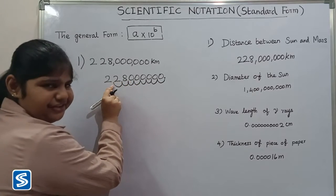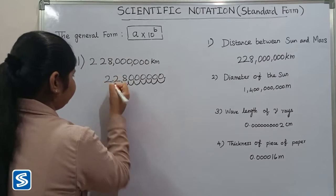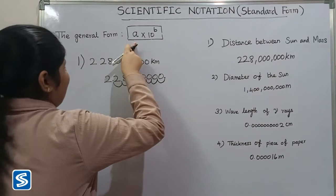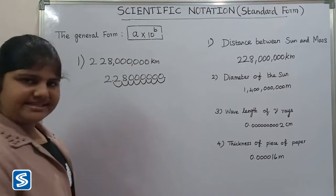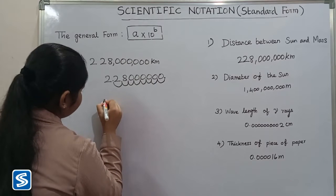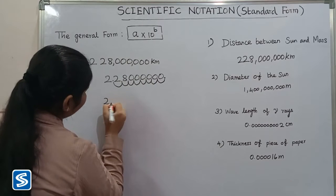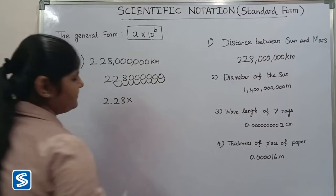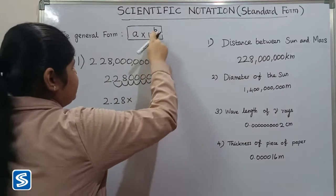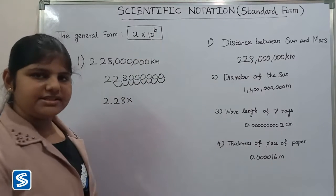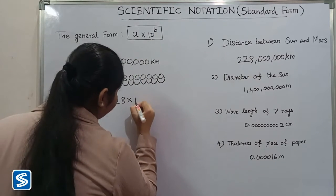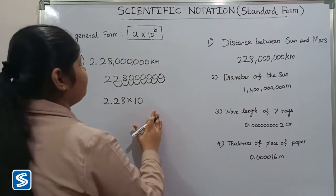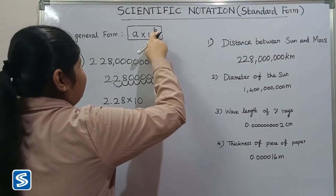We place the decimal point here, so the a value is 2.28. We multiply by 10, since the base is always 10. Now we need to find the b value.